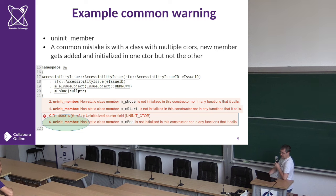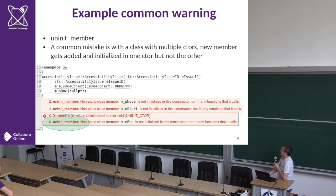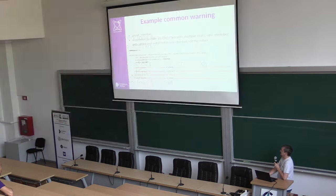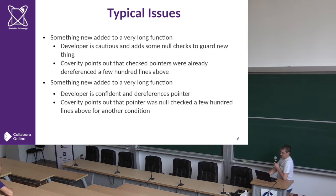A common warning that comes up is when people add a new member to a class that has two constructors. They know it needs to be initialized but only initialize it in the first constructor and miss it in the second. Coverity catches these common errors, and also catches typical issues arising in very long functions where somebody adds something new.